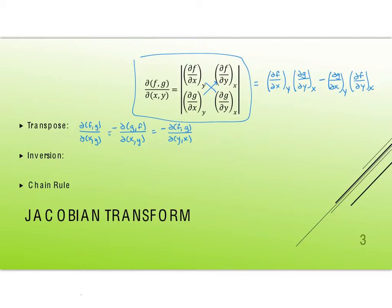The inversion simply says that I can do a reciprocal sort of relationship. So how f and g changes with x and y is the reciprocal of how x and y changes with f and g.